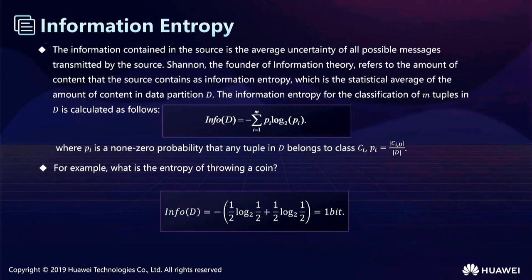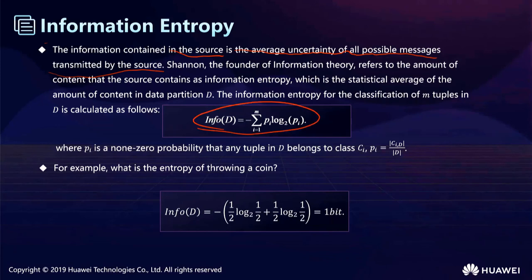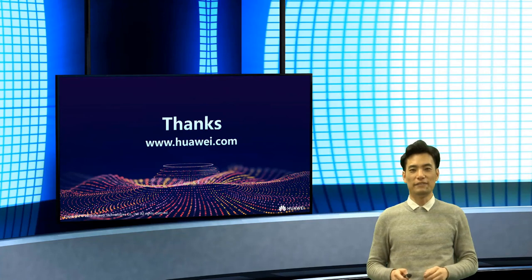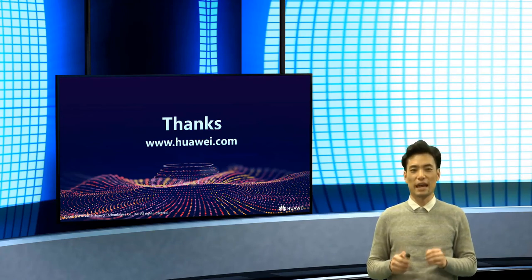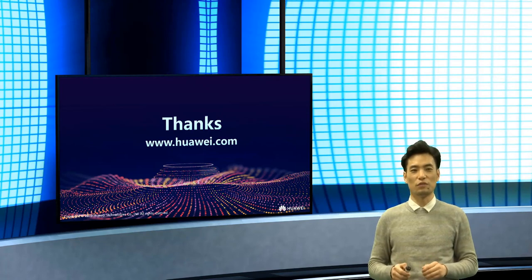Information entropy is the average uncertainty over all possible messages from a source. It describes the level of uncertainty and is calculated using Shannon's entropy formula H(X) = -sum of p_i * log(p_i). For example, for a fair coin toss, the entropy equals 1 bit. We have now learned the basic concepts of probability theory, distribution functions, numerical characteristics of random variables, and information theory. Although studying this material can be boring, it is essential because math is the foundation of algorithms — mastering this part helps us understand algorithms better. Hope to see you in the next video, thank you for watching, bye.